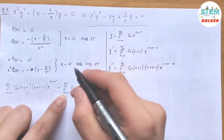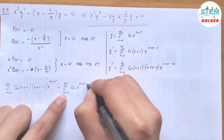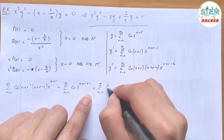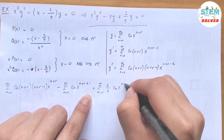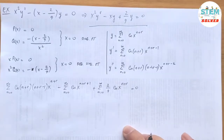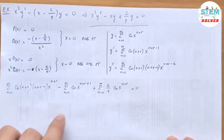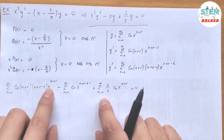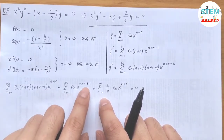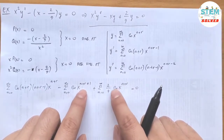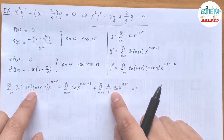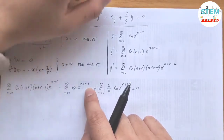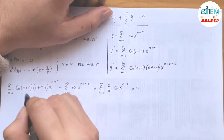The second term becomes the series from 0 to infinity of c_n times x to the n plus r plus 1, and the third term is the series from 0 to infinity of 2/9 times c_n times x to the n plus r equals 0. Looking at the indexing: when n equals 0, the first and third series give x to the r, but the second series gives x to the r plus 1. We need to run out the first and third series to align with the second.